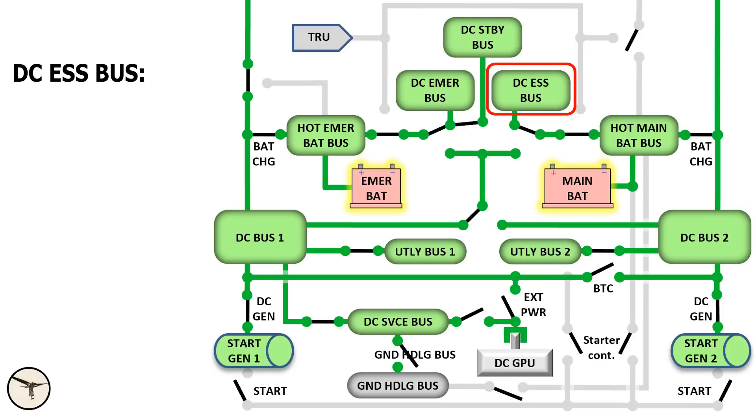DC essential bus: air condition pack 1 and 2. So now we have to descend. Auto system. Calls PA. They are lost.